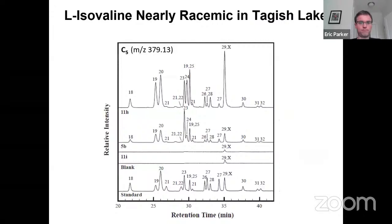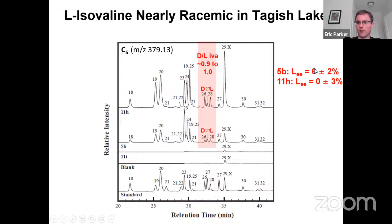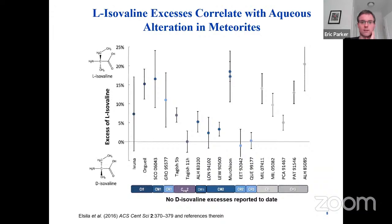This L isovaline excess doesn't appear to be from terrestrial contamination because isovaline is rare in terrestrial biology. There also appears to be some level of correlation between the aqueous alteration of the parent body and the amount of L excess observed, and this has been seen in a variety of meteorites including fragments of Tagish Lake and Murchison. Looking at Tagish Lake chromatograms — standard, blank, procedural blank, then fragments 5B, 11I, and 11H from bottom to top — we see mostly racemic evidence of L isovaline in Tagish Lake, with just a little bit of possible L enantiomeric excess in 5B.